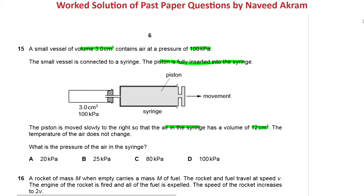The temperature of the air does not change. What is the pressure of the air in the syringe? From the data - volume and pressure - and from the fact that the temperature does not change, we know that we have to apply Boyle's Law.